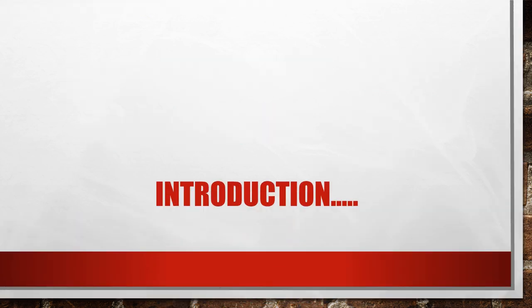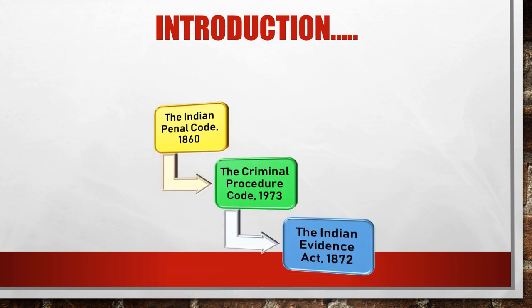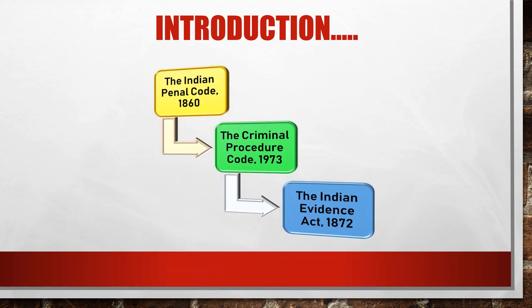In India, criminal law is divided into three parts. The first one is the Indian Penal Code 1860, the second is the Criminal Procedure Code 1973, and the third is the Indian Evidence Act 1872. The combination of these three acts makes up criminal law.